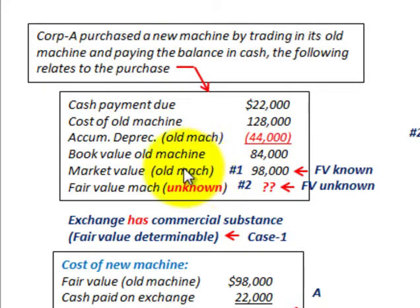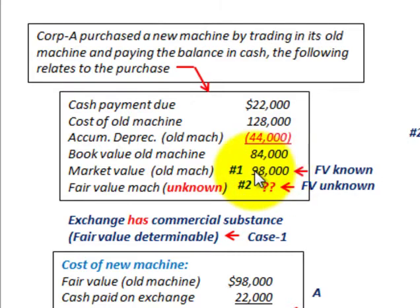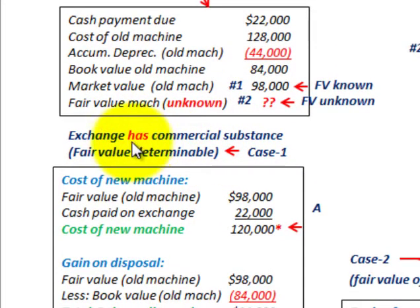For case one, we know the market value or fair value of the old machine — it's ninety-eight thousand dollars. You can see its fair value is greater than its book value, so we're going to have a gain on this transaction. For case two, the fair value or market value of the machine is unknown. Case one we know the fair value; case two we don't.